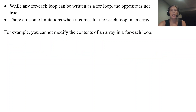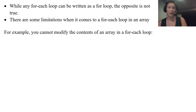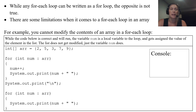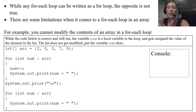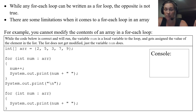While any for-each loop can be written as a for loop, the opposite is not true. There are a lot of limitations with the for-each loop. For example, you cannot modify the contents of an array in a for-each loop. The code will run fine with no runtime error, but the variable num in the for-each loop is a local variable — it gets assigned the value of an element, but the actual element itself never gets modified.